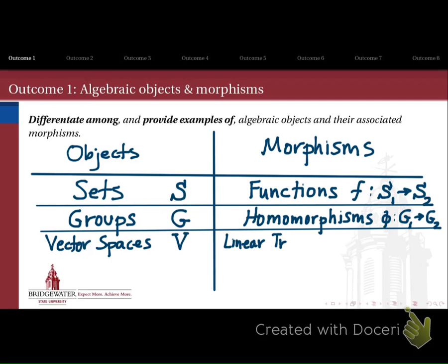In linear algebra, you learn about vector spaces, and the morphisms connecting one vector space to another are called linear transformations. These are functions from one vector space to another that map vectors to vectors, but they also have properties respecting the additional structure — namely, the linear property that the function applied to a sum gives you the sum applied to the functions, and likewise with scalar multiples.